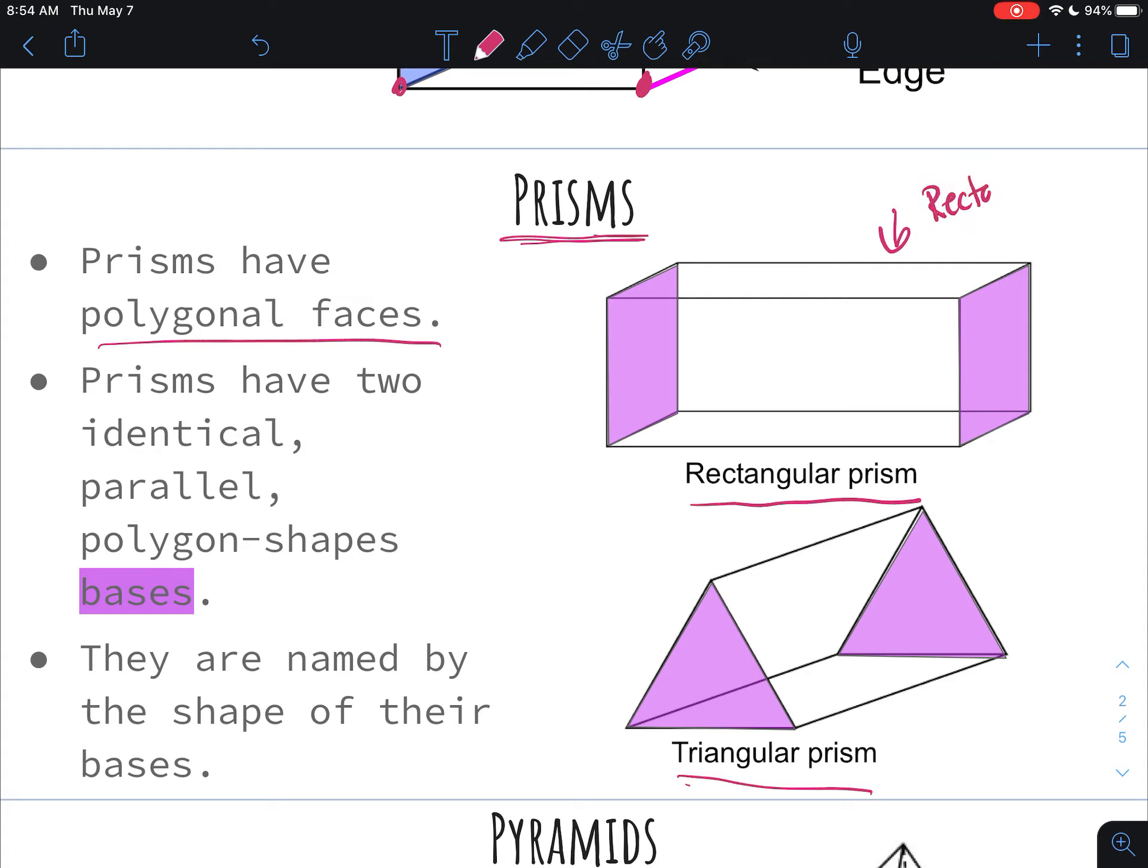So prisms have polygonal faces, which you should know that all of the sides in a rectangular prism, they're all rectangles, so the faces are rectangles. The faces in a triangular prism though, you have two triangles and then you have three rectangles. They're all made of polygon-shaped faces.